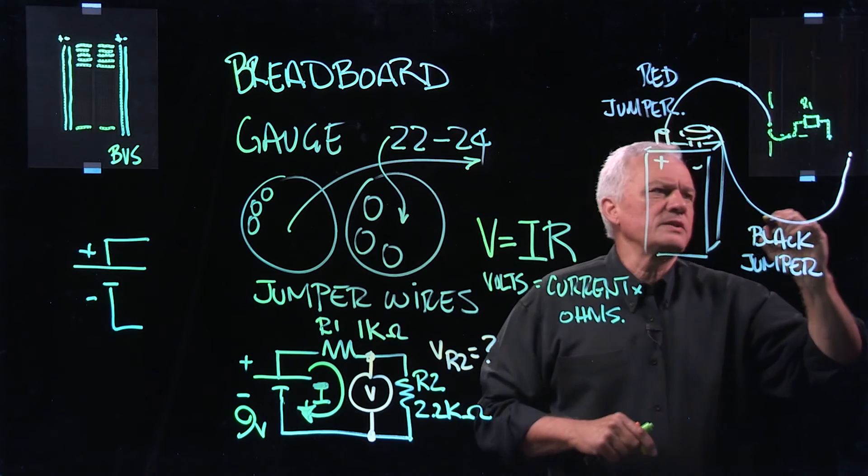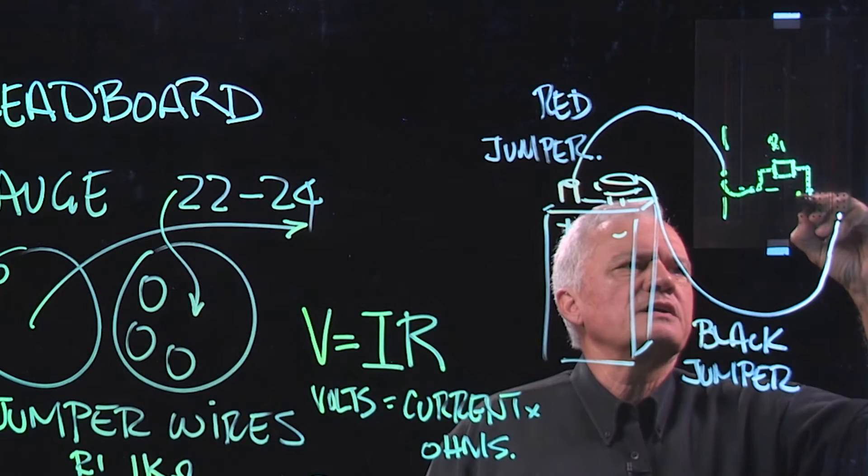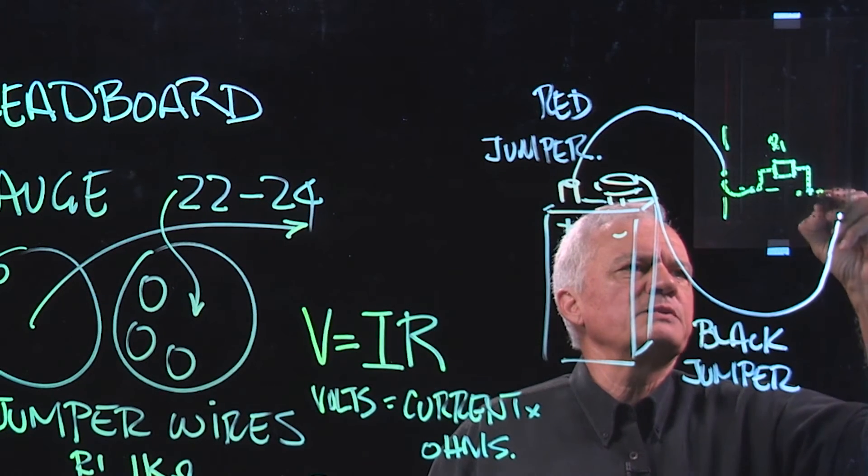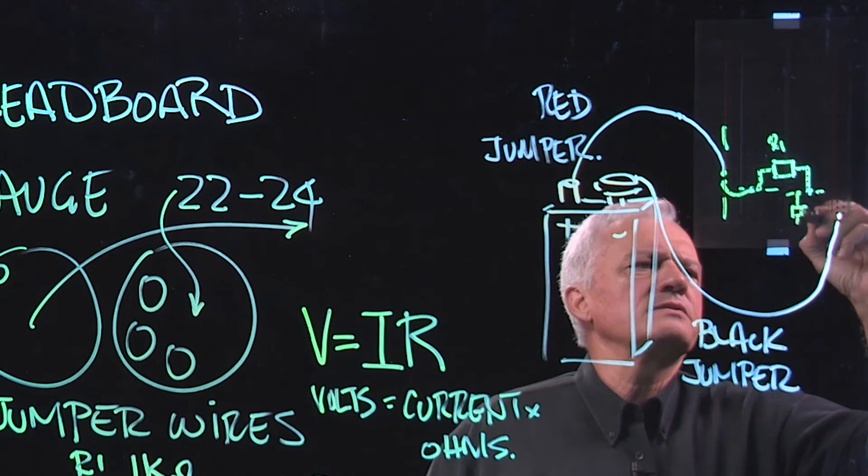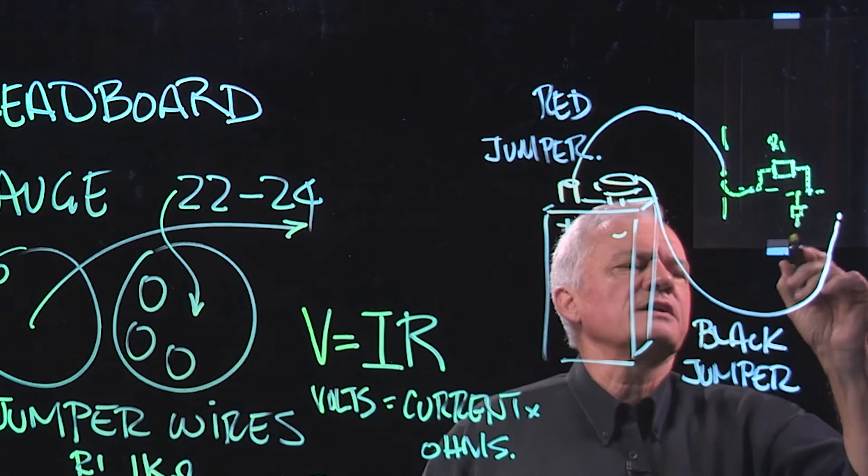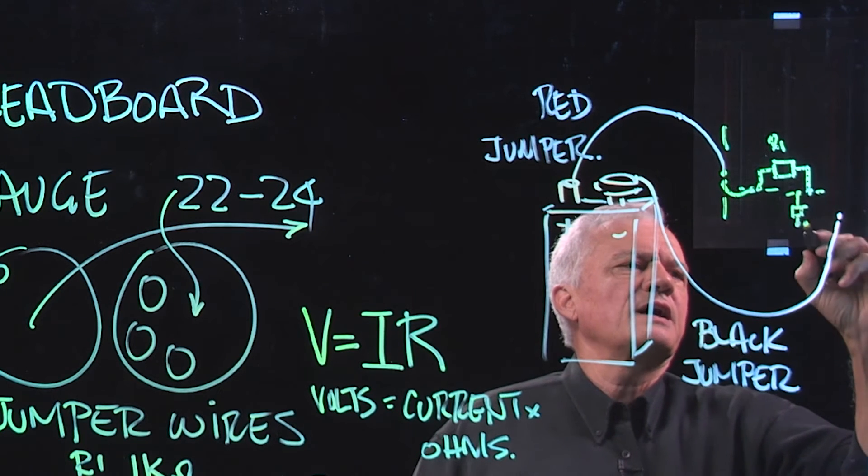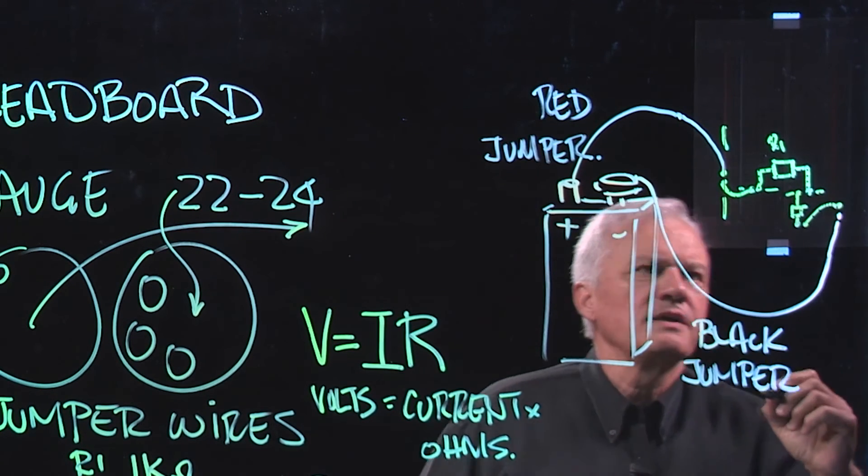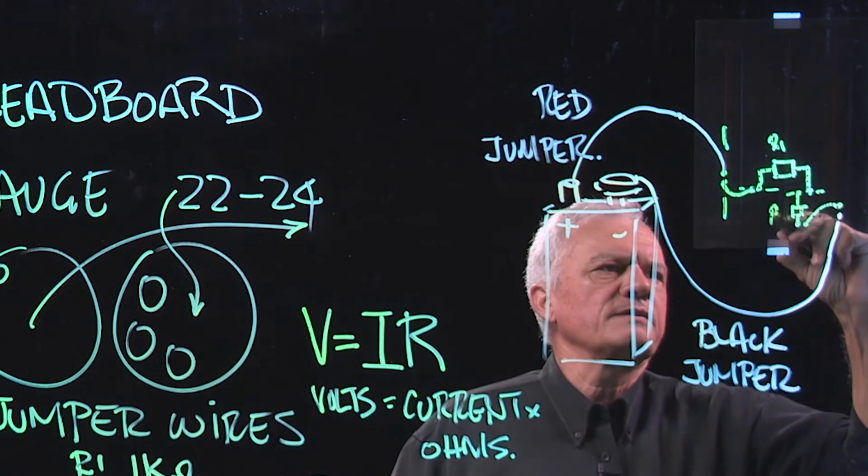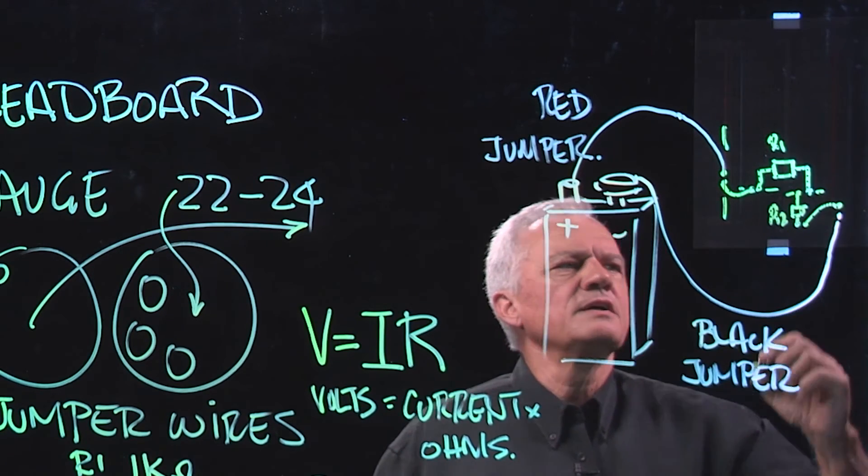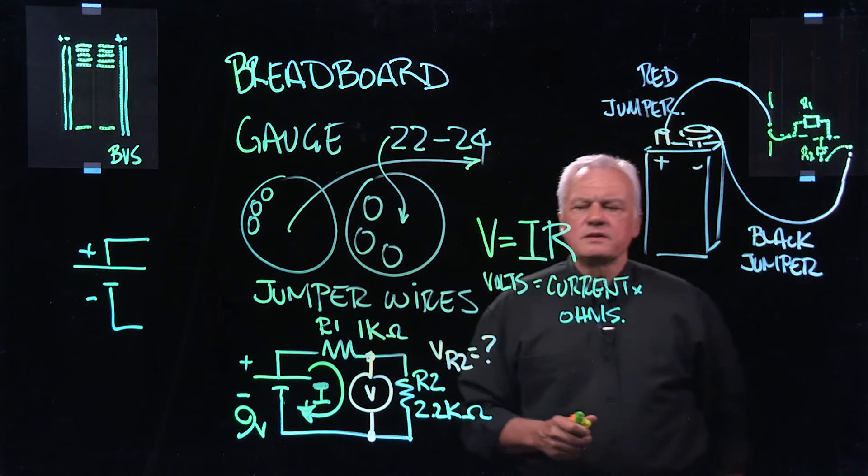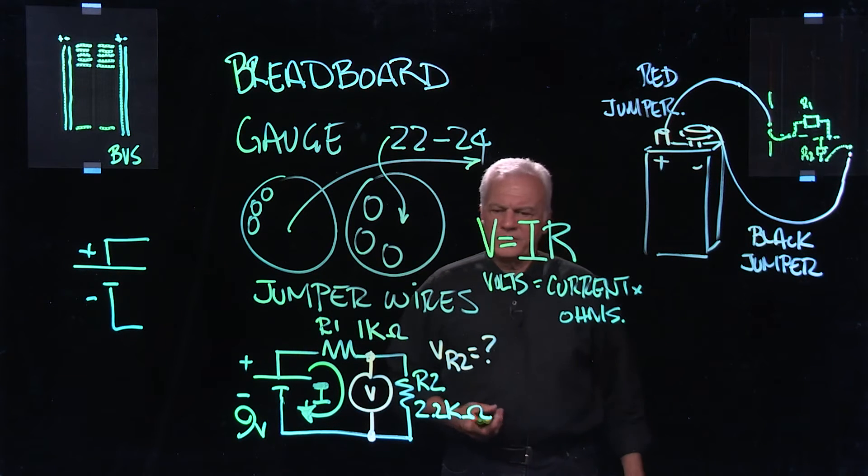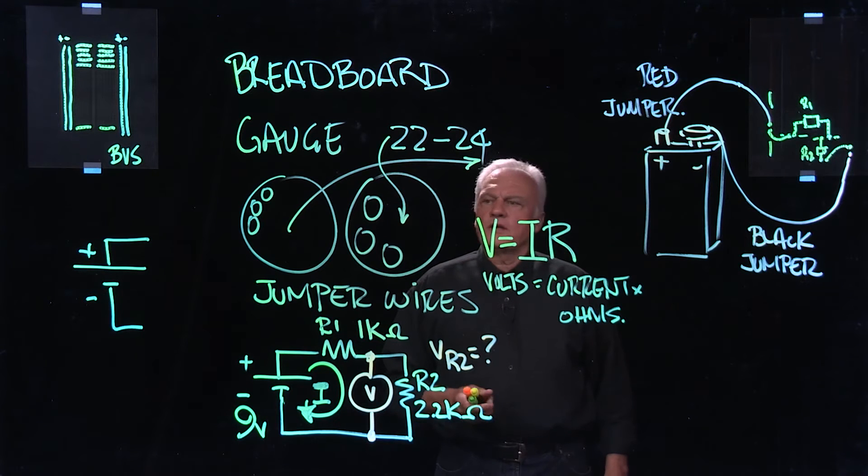Now, we need another resistor. We need R2. So I'm going to take R2 here. As you can see, I'm right beside it. And I'm going to put it in right to here. And then beside it here, I will take another jumper into that bus. Now, I've completed my circuit. So all I need to do is take my voltmeter and simply place it across R2 and take a reading in volts.